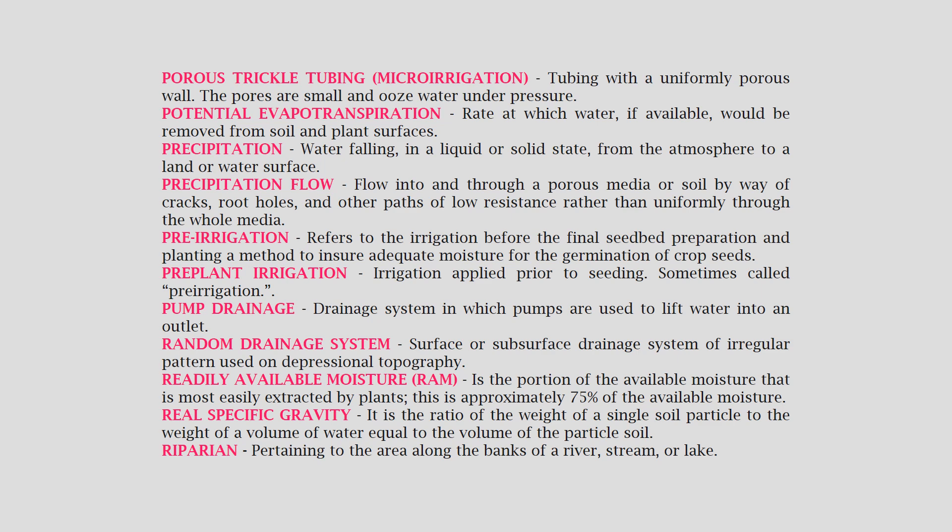Precipitation flow: flow into and through a porous media or soil by way of cracks, root holes, and other paths of low resistance rather than uniformly through the whole media. Pre-irrigation: refers to the irrigation before the final seed bed preparation and planting, a method to ensure adequate moisture for the germination of crop seeds.